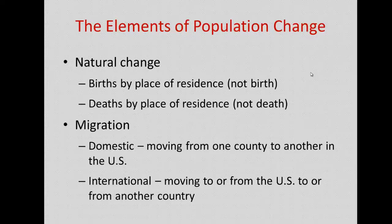There are elements of population change broken into two parts: natural change and change due to migration. Natural change involves births and deaths. We count births by the place of residence of the mother — not where the baby was born. Deaths are similarly counted by where the person lived, meaning their place of residence, not necessarily their place of death.